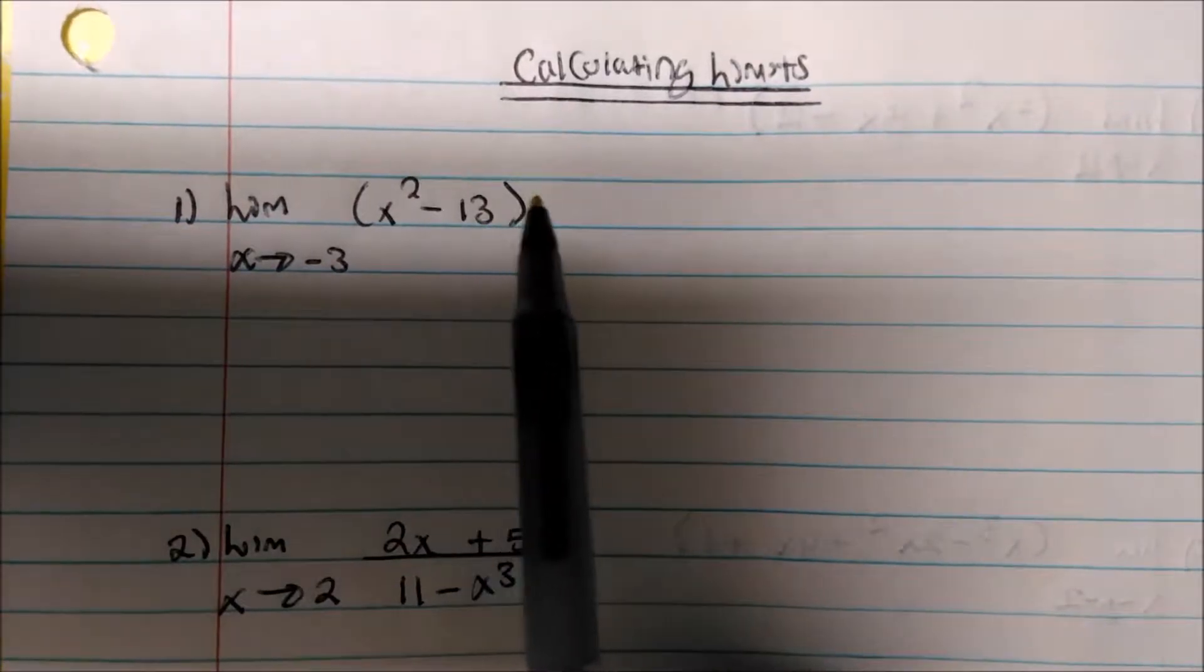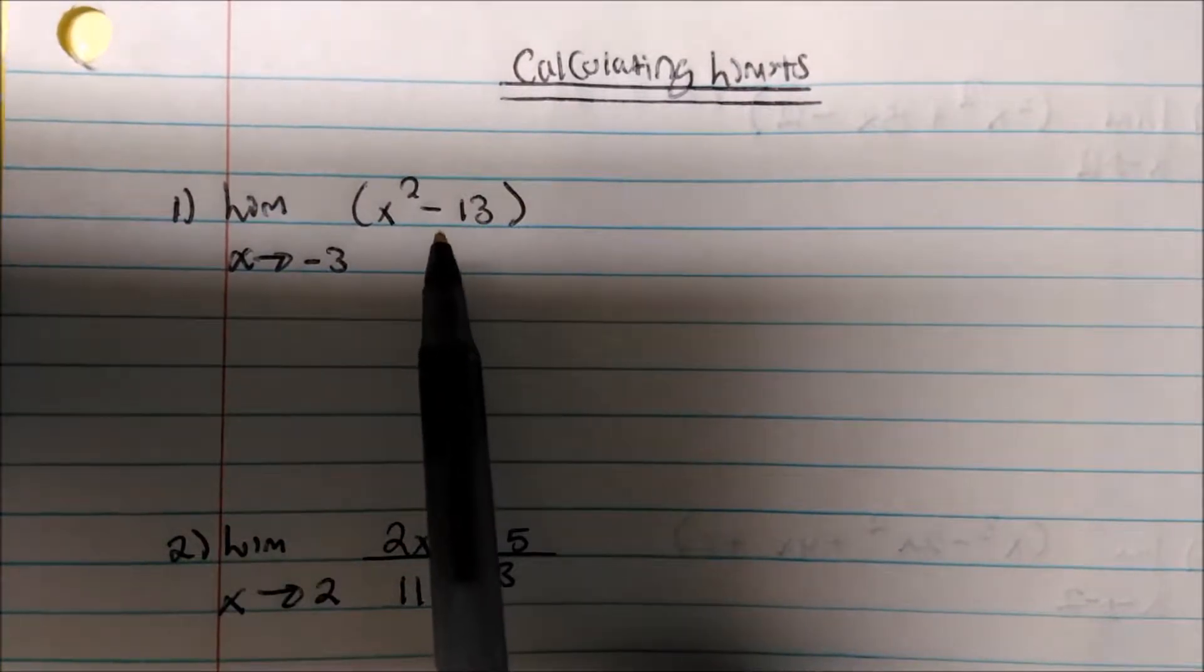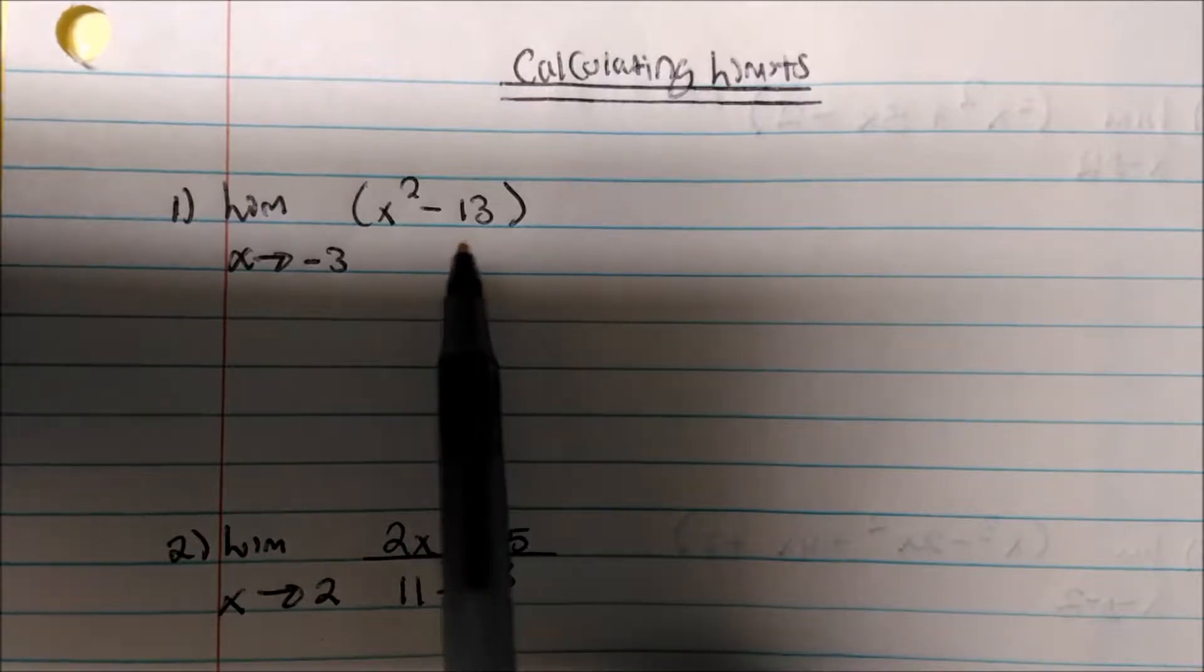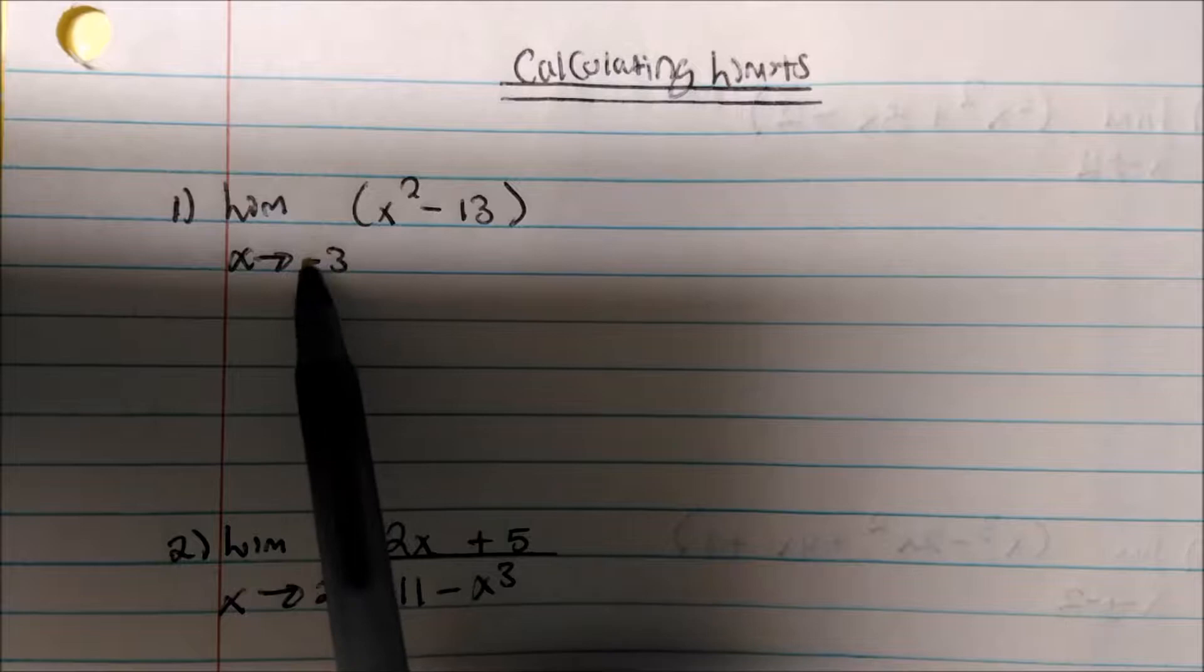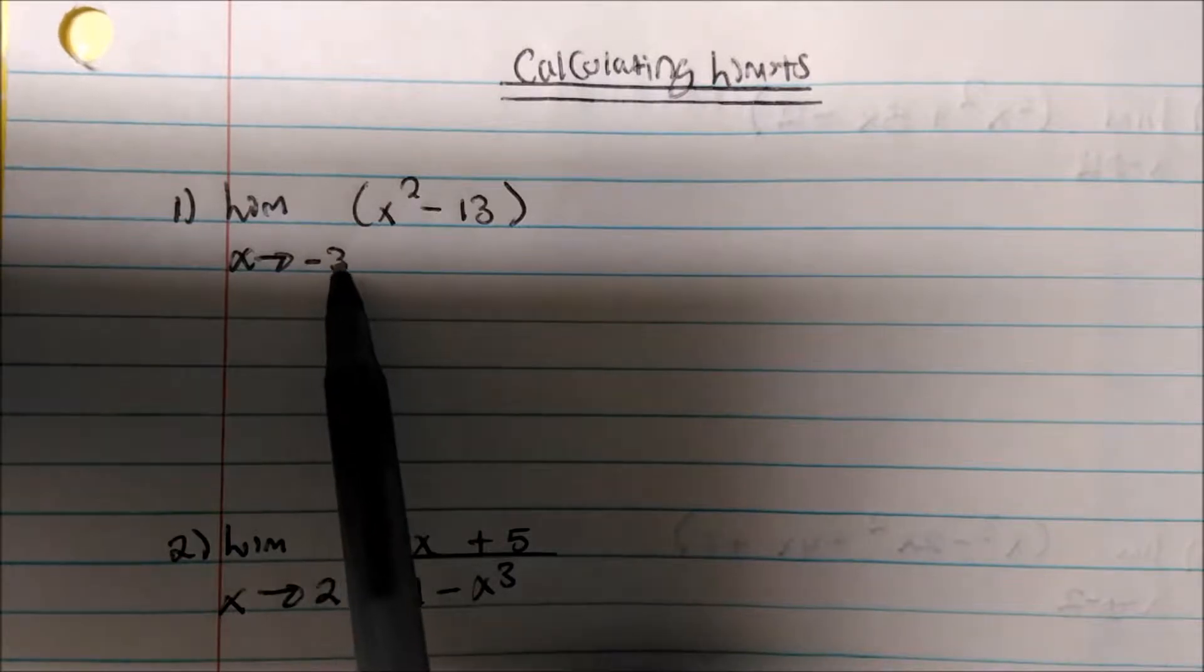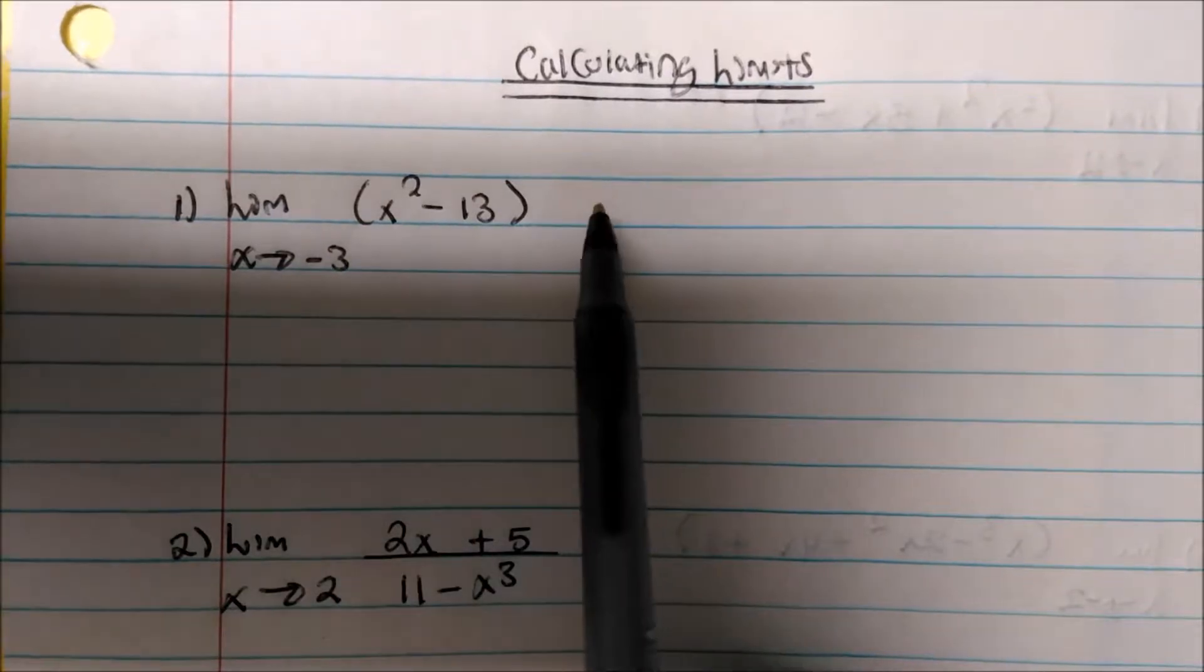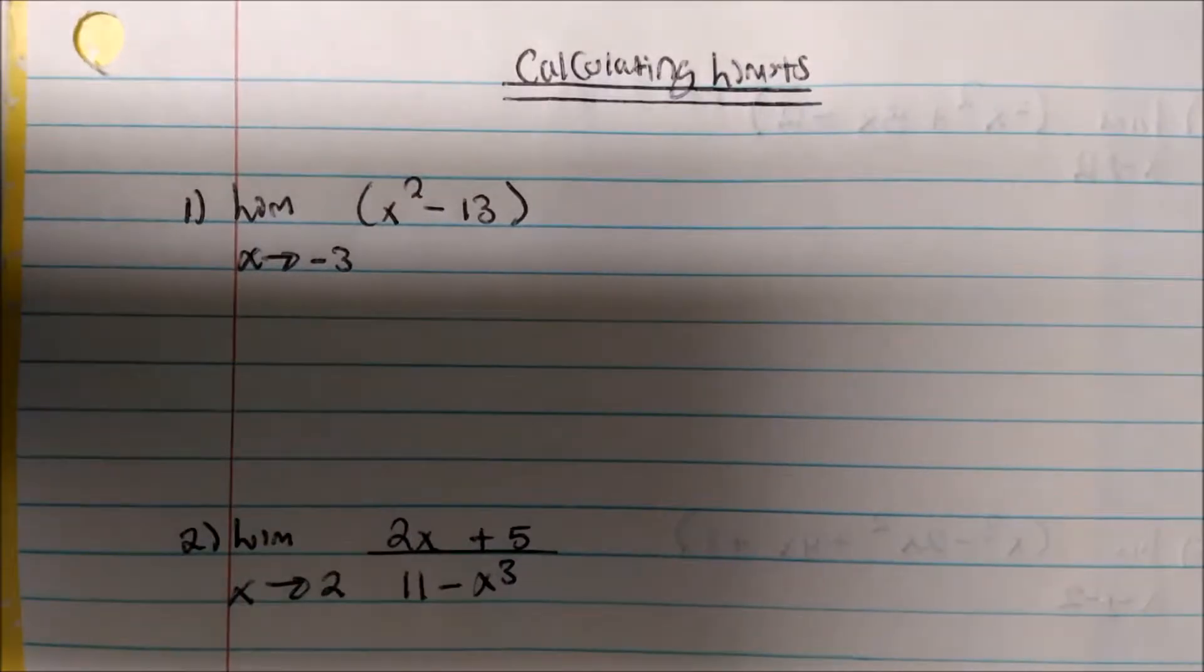We're going to talk about limits and we have a couple of problems here to solve. We see this function here. The limit as x approaches negative 3 is what? Basically the question is, as x approaches negative 3, what is the y value of the function approaching?